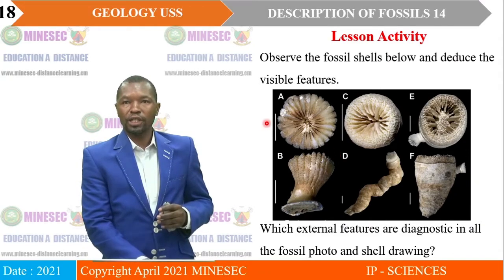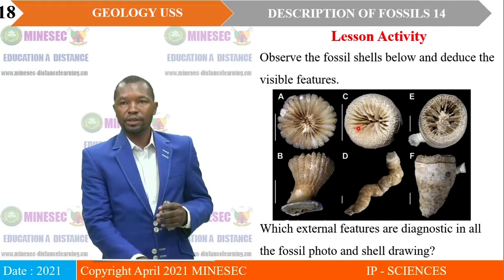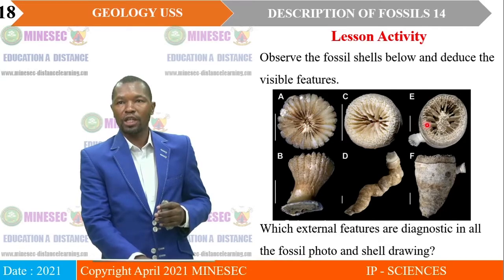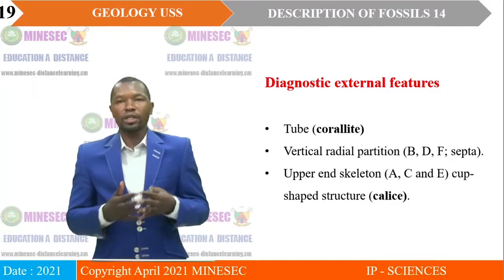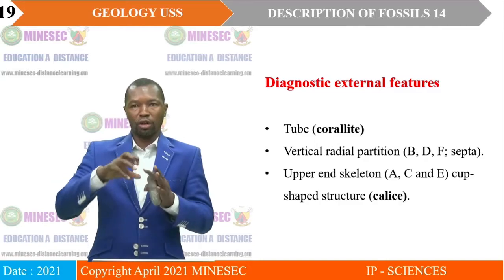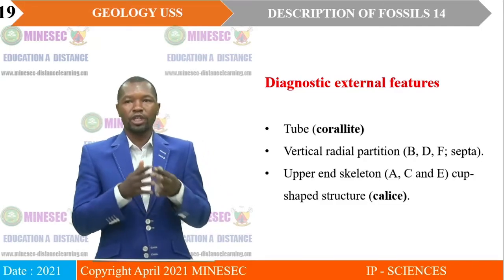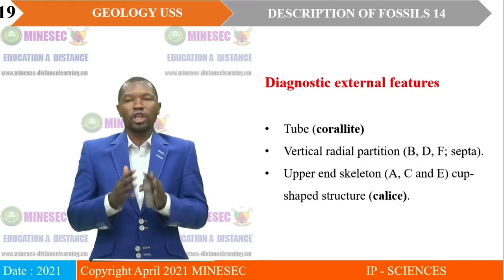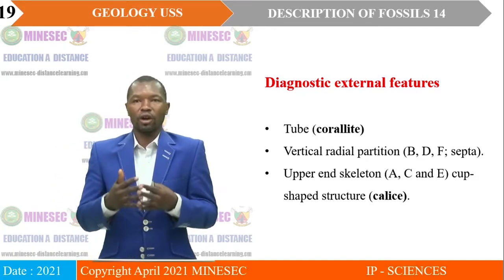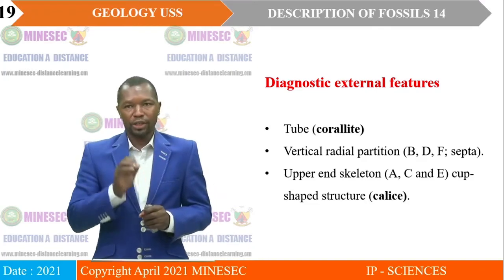Notice the central position — the placement for fossil A. In fossil B, it is hidden, but the outer shell indicates some coiling. For fossils A, C and E, the top portion is very clear. The diagnostic features identical in the different photos involve the tube — that is the top portion that looks rounded, called the corallite. We have the vertical radial partitioning, very common with fossils B, D and F, generally called the septa. Then we have the upper end skeleton visible for fossils A, C and E — this provides the cup-shaped structure called the calyx. These are the visible features that are diagnostic in the photos.